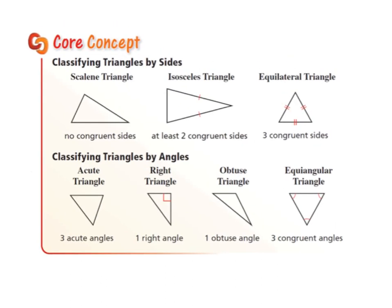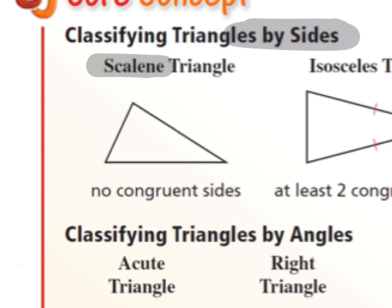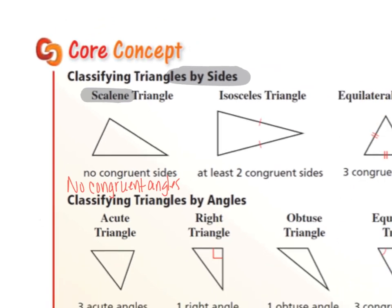So if we're talking about classifying triangles by their sides, we do it three ways. Scalene means that there's no congruent sides, and if there's no congruent sides, there is also no congruent angles. So that's scalene — nothing is the same, all the sides are different, and all the angles are different.